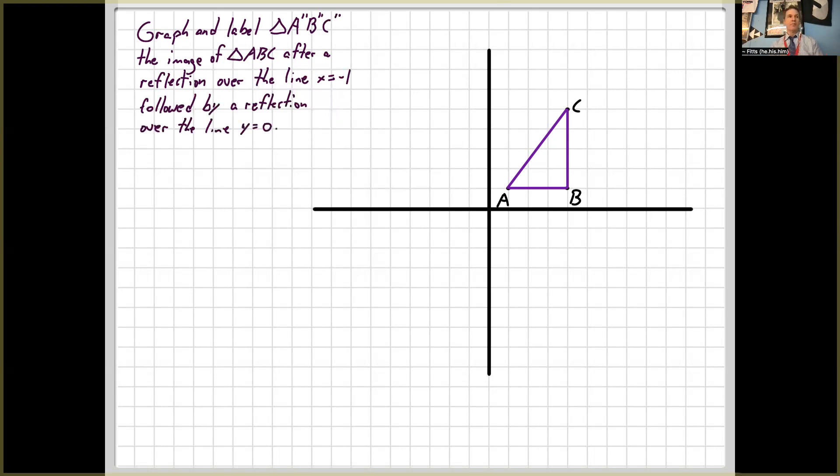Okay, so we're going to reflect this image. This is our pre-image. I'm going to reflect it over this line X equals negative one. That's the vertical line X equals negative one, not to be confused by the X axis. So this is where all of the X coordinates happen to equal negative one. So like negative one, negative one, negative one, zero, negative one, one, negative one, two, and so forth.